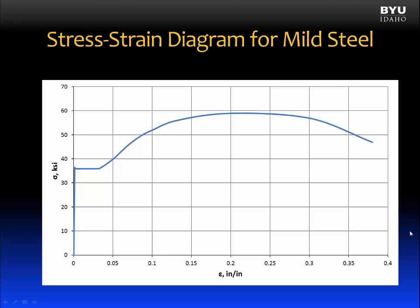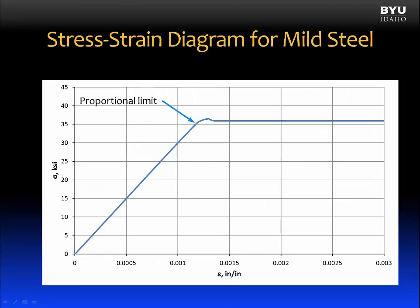In previous lessons, we've looked at stress-strain diagrams for various materials, including mild steel. I would like to zoom in on that initial region of the stress-strain diagram where linear behavior is occurring. The proportional limit is the point at the top of the linear portion of the curve, right about here, and has a corresponding proportional limit stress and a proportional limit strain.